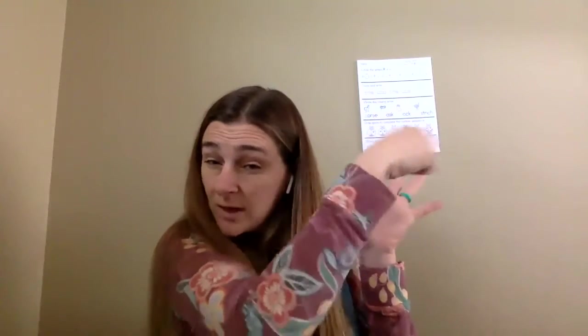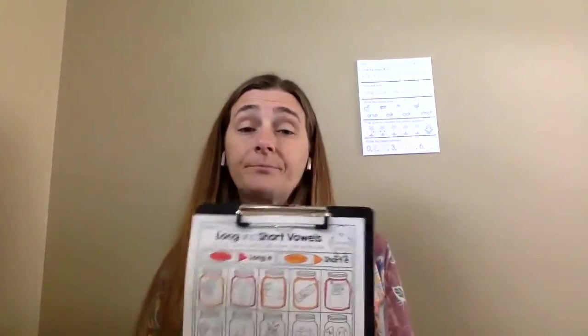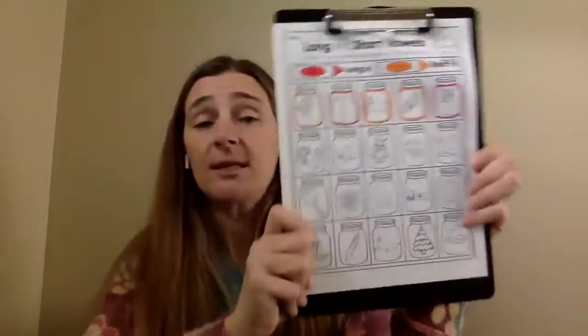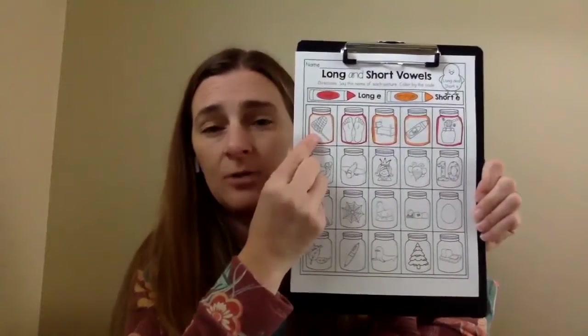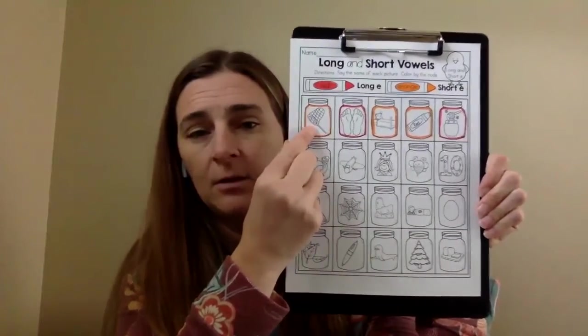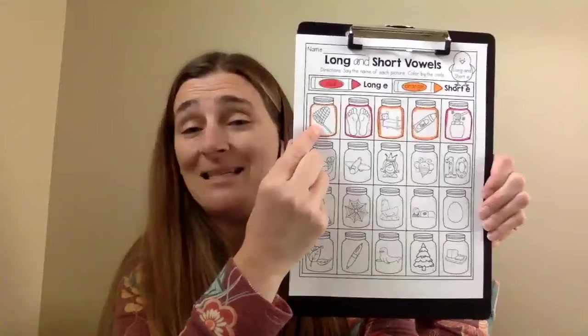We're going to do the first row together. And remember teacher already did it because it's hard for me to draw when it's up in my hand. But we're going to go through and we're going to look at the pictures and I want you to go along with me and then you can do the rest on your own. So let's look at that first picture. What is that a picture of?